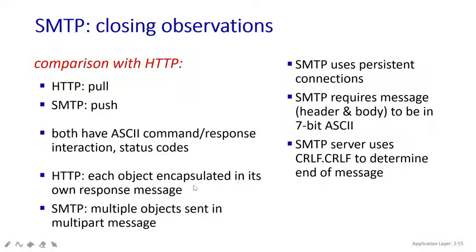In HTTP, each object has to be encapsulated in its own response message. Whenever an HTTP message is sent to the response side, it has to encapsulate or put everything together — the objects. But in SMTP, multiple objects can be sent with multiple parts of the message. You can write multiple messages or mails whenever you want to send.